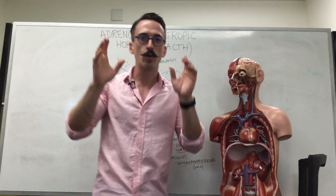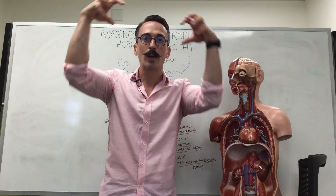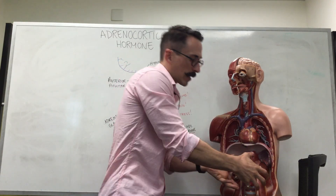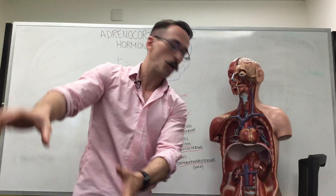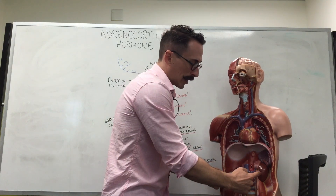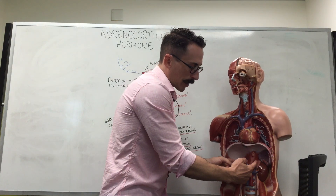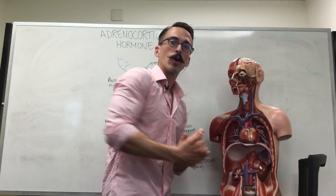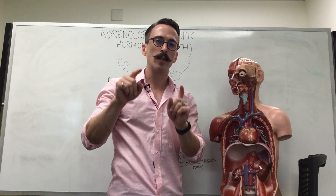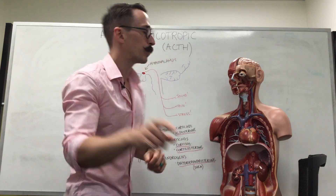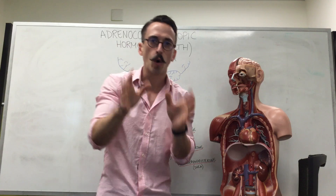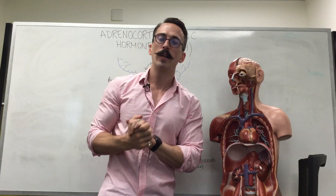First: 'adreno' means the adrenal glands. These are the little caps that sit on top of our kidneys. I've got Frank here — I've taken out his abdominal organs, and what you can see at the back of his abdomen are his two kidneys and the two caps that sit on top, called the adrenal glands. So this hormone stimulates the adrenal glands.